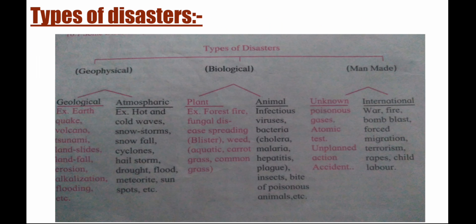In geophysical disasters, examples include earthquakes, volcanoes, tsunamis, and landslides. Within geophysical, geological and atmospheric are the two sub-types. In biological disasters, there are two types: one caused by plants and the second caused by animals.